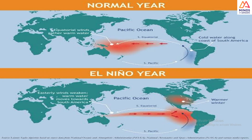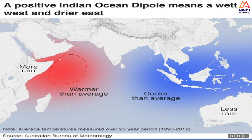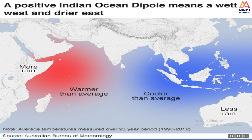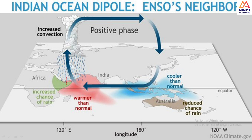In the positive IOD phenomenon, stronger trade winds accumulate warm water and it tends to move further, resulting in the accumulation of warm water towards the western side of the Indian Ocean — that is the Arabian Sea and the Horn of Africa region. This results in upwelling of cold water from below on the eastern side. The low pressure created in the Horn of Africa region tends to move air particles upward.